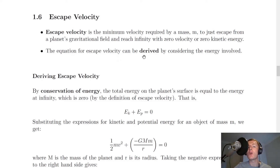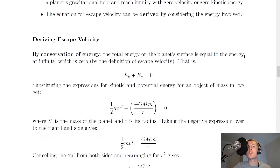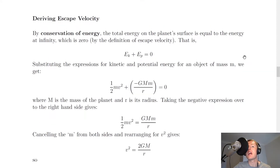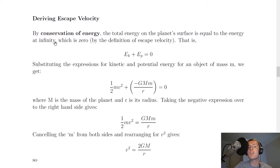The equation for escape velocity can be derived by considering the energy involved. You need to be able to derive an expression for escape velocity in the advanced higher course. By conservation of energy, the total energy on the planet's surface is equal to the energy at infinity, which is zero by the definition of escape velocity. So the kinetic energy plus the gravitational potential energy is equal to zero.